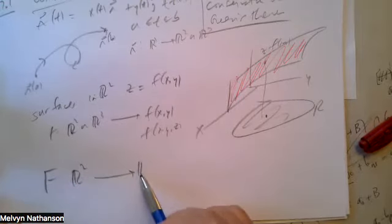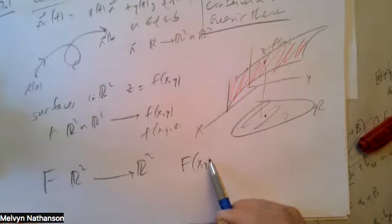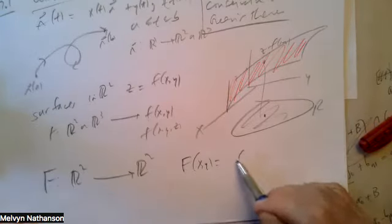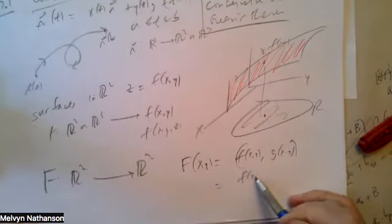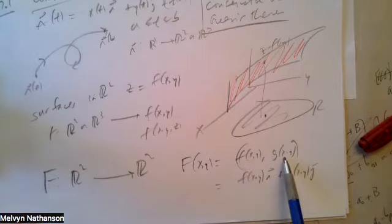The generalization of that is very straightforward: you have a function called capital F. If it's a function of two variables, its value is always a vector in two variables. A vector field assigns to every vector XY a new vector whose coordinates are F(XY) and G(XY), or written as F(XY)i + G(XY)j. This is a vector field in two dimensions — given a vector XY, you create a new vector in two dimensions.